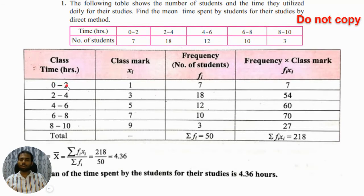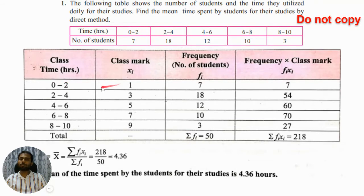Class mark is found using lower class limit and upper class limit — you add them and divide by two. So zero plus two is two, divided by two is one; four plus two is six, divided by two is three; four plus six is ten, divided by two is five, and so on.